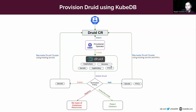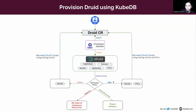KubeDB provides services for coordinator, overlord, router, and broker — all deployed by the operator. It also creates secrets like authentication secrets, an AppBinding containing information about the Druid cluster, and PVCs — if you choose to deploy Druid in durable mode, persistent storage is needed for data servers. As seen in the architecture, PVCs will be deployed for middle manager and historical nodes.